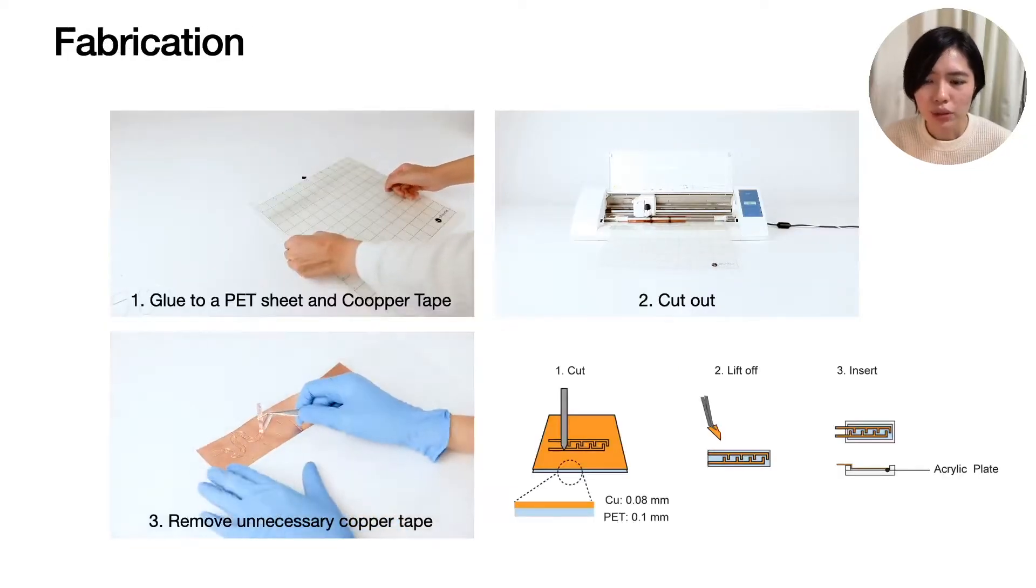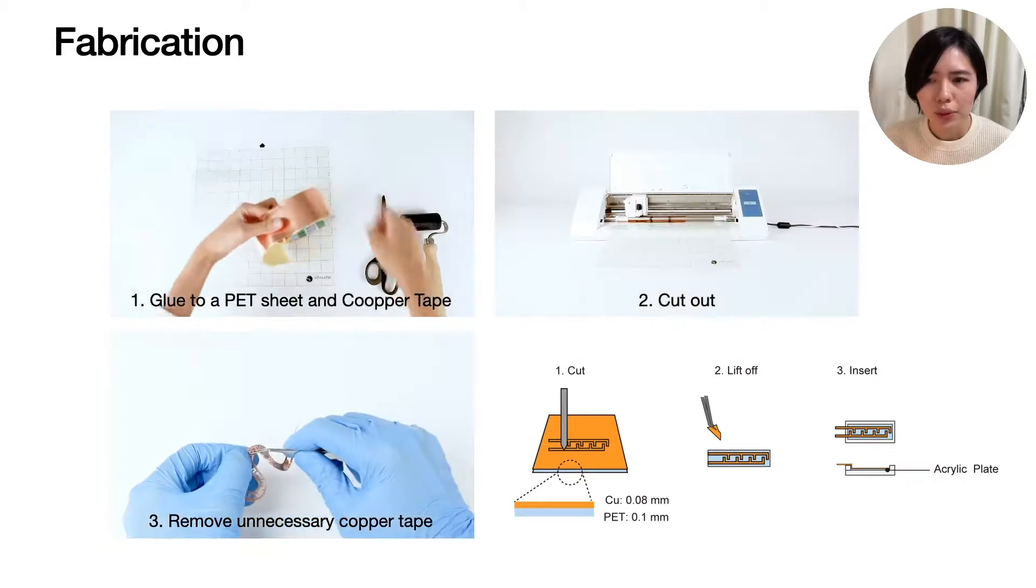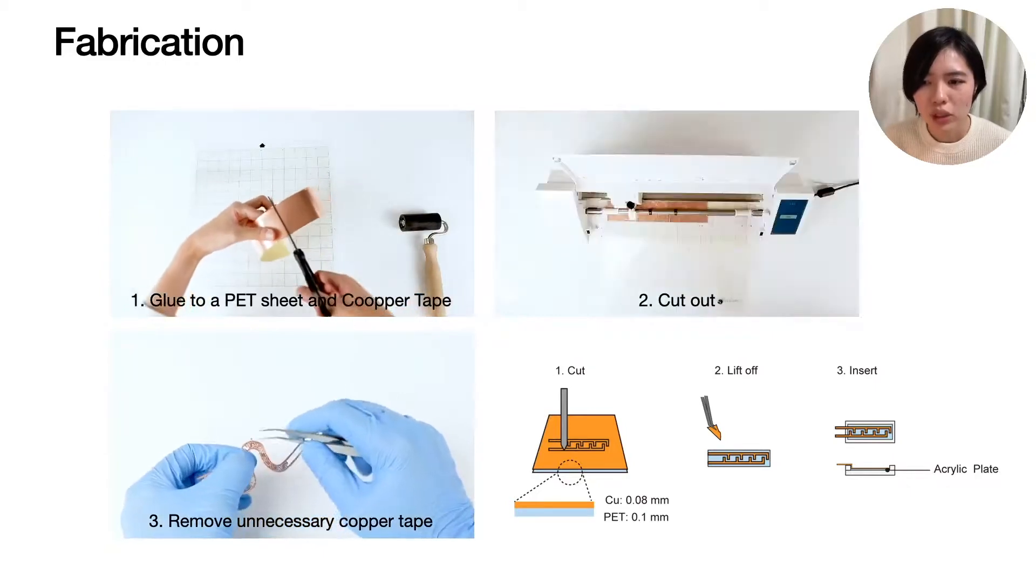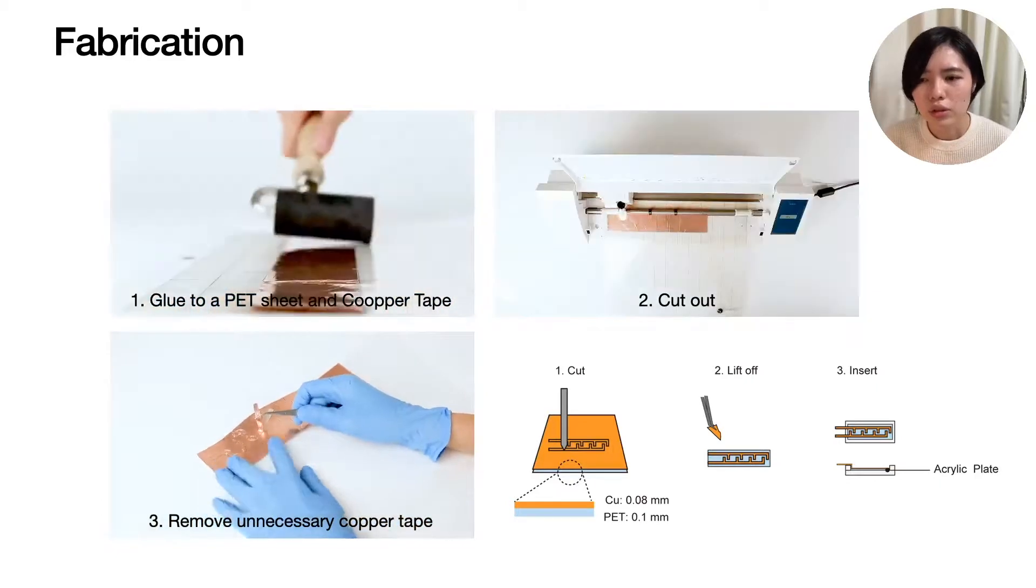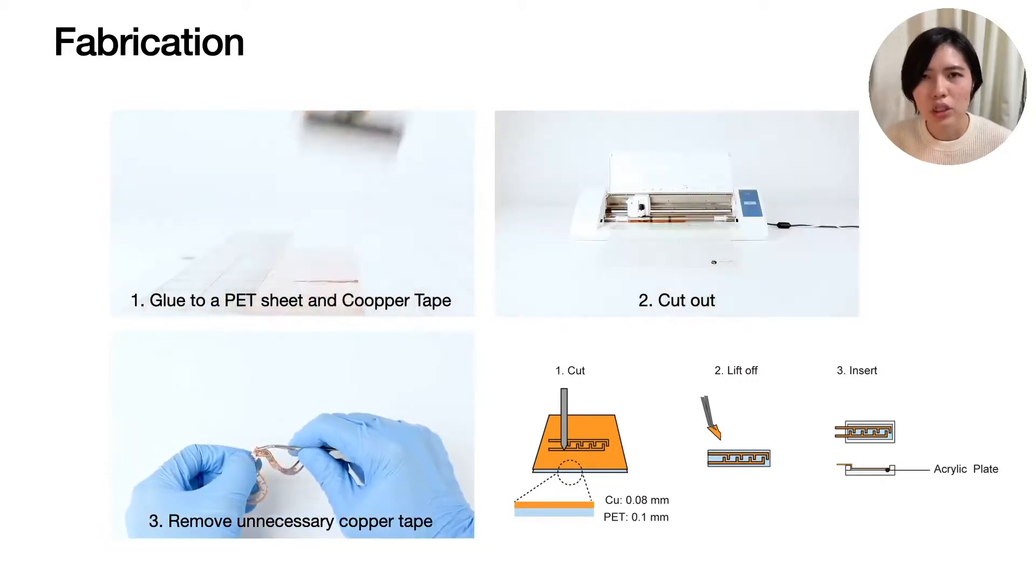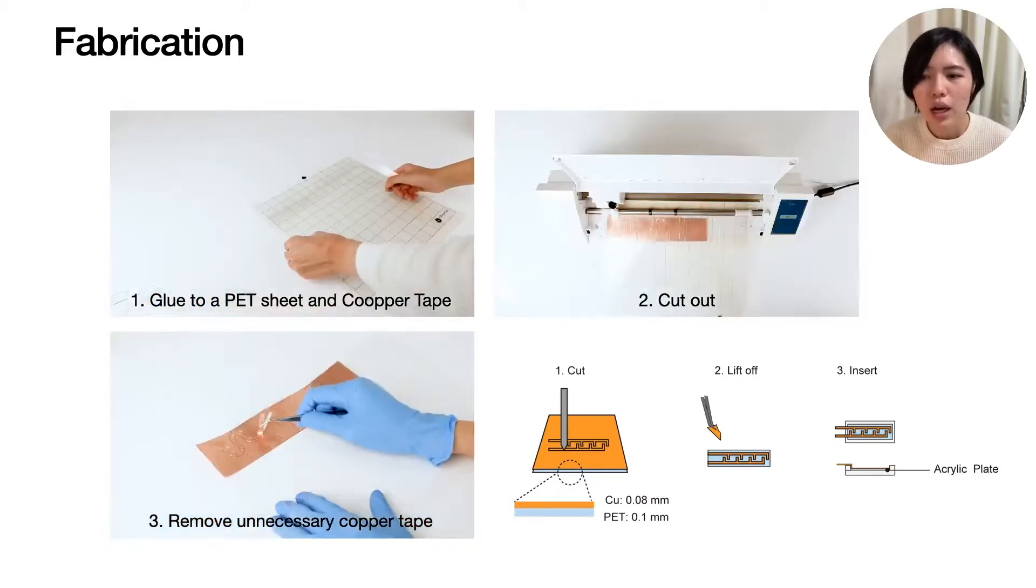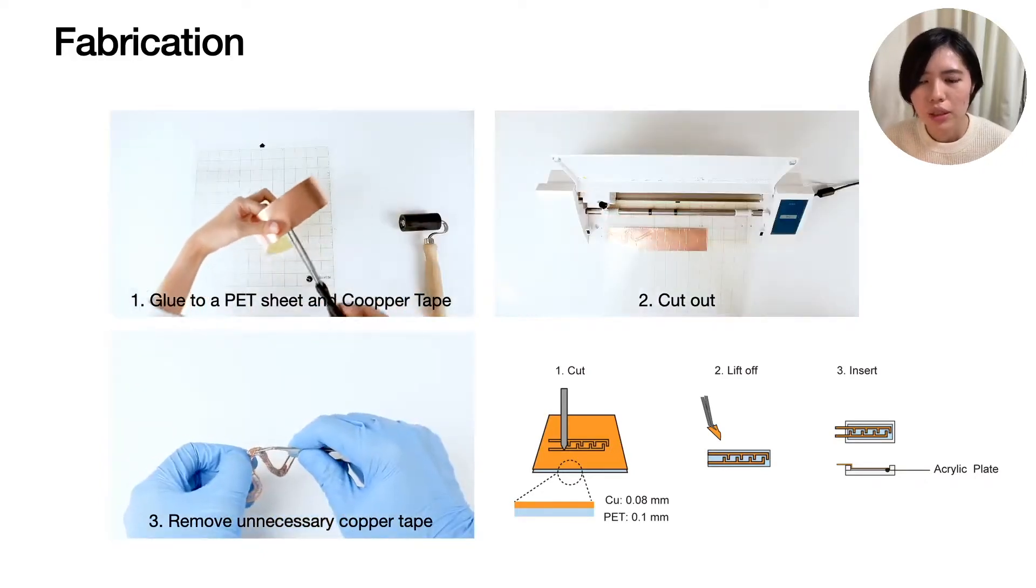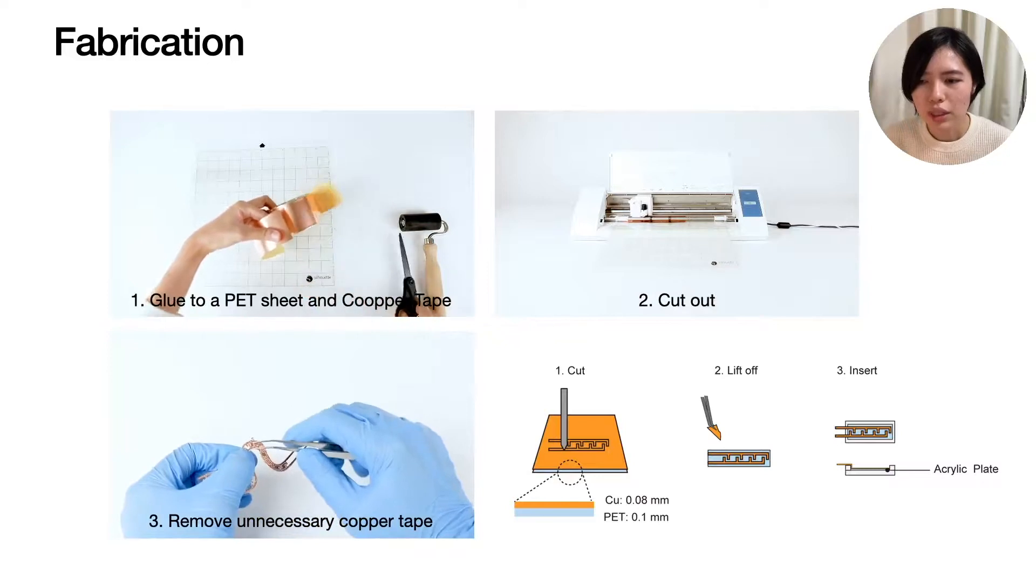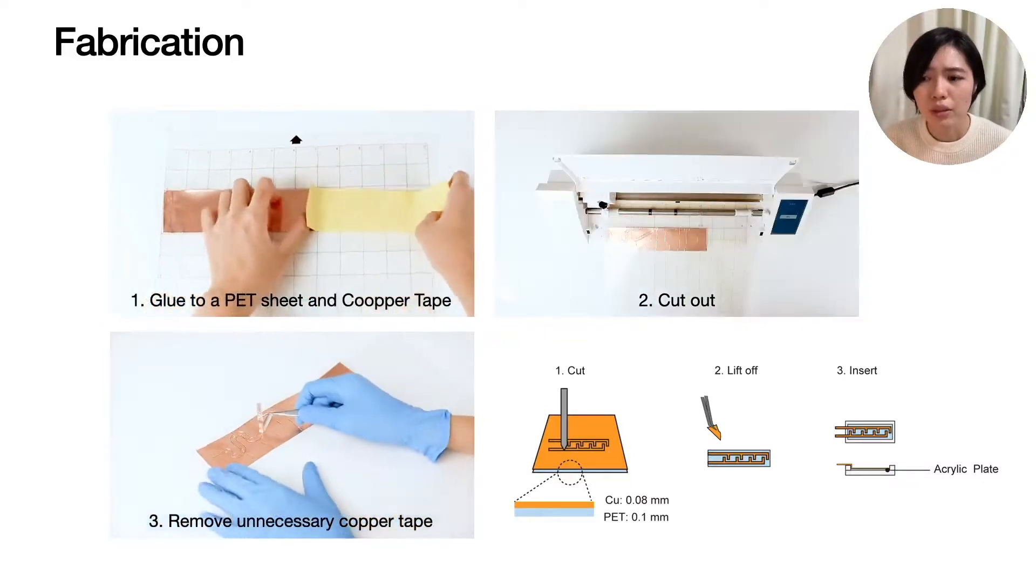The fabrication process is simple. First, copper tape is glued to a PET sheet using a roller. Second, a cutting plotter is used to cut the tape into the designed shape. After cutting, unnecessary copper tape is removed using tweezers. The cut-out electrodes are then inserted into the pump part of the object.